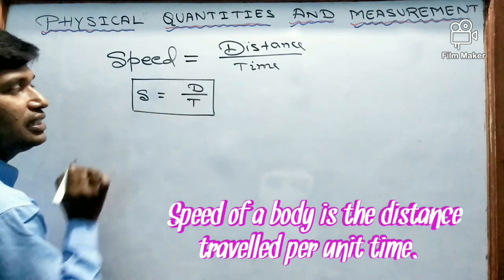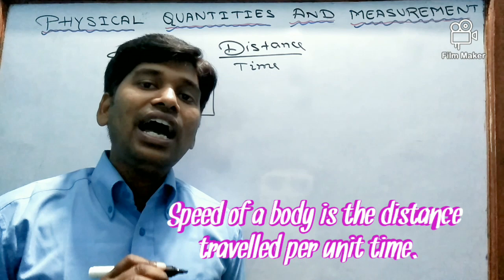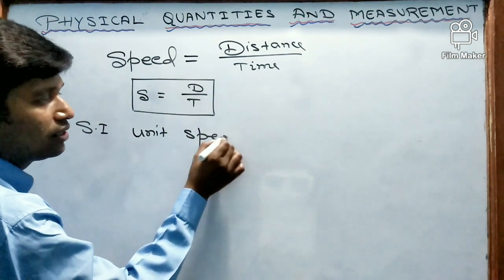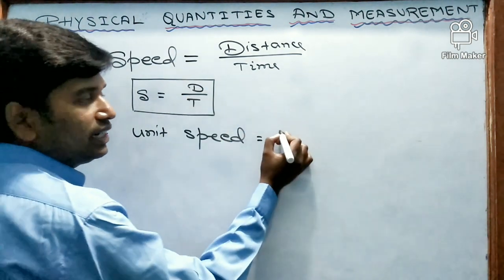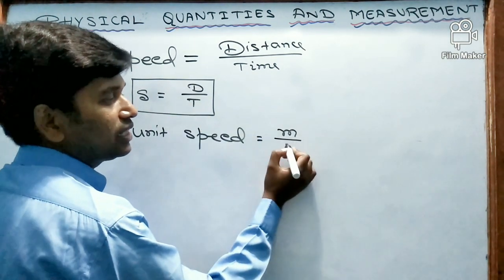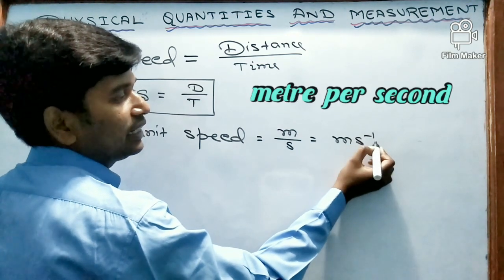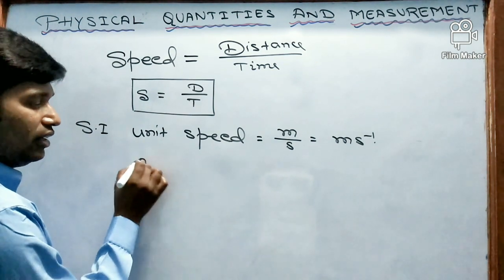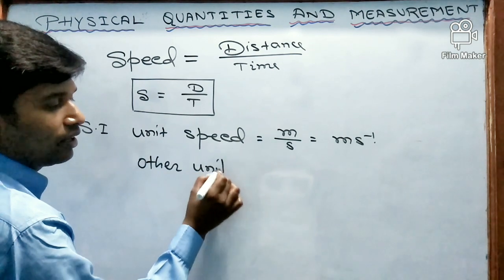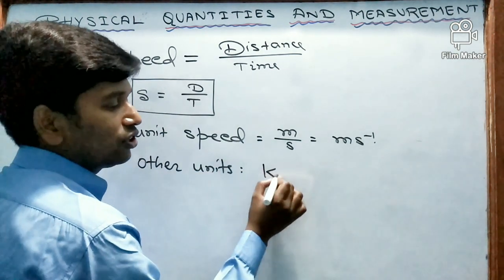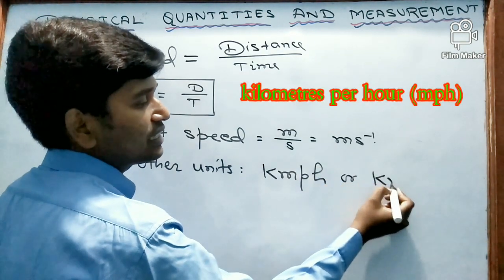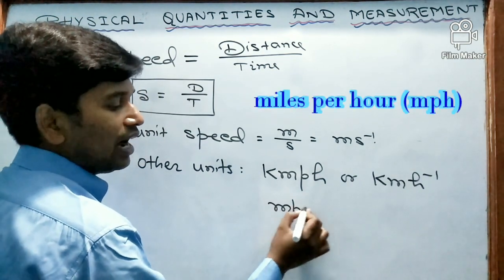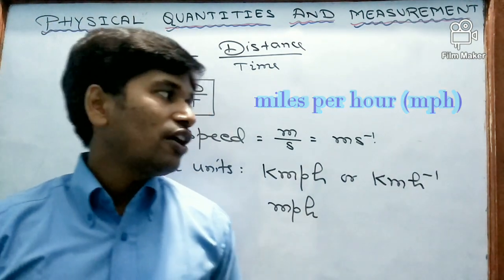Let us see the SI unit of speed. Distance is measured in meter and time is measured in second, so meter per second is the SI unit of speed. Other units include kilometer per hour and mile per hour. So these are the units of speed.